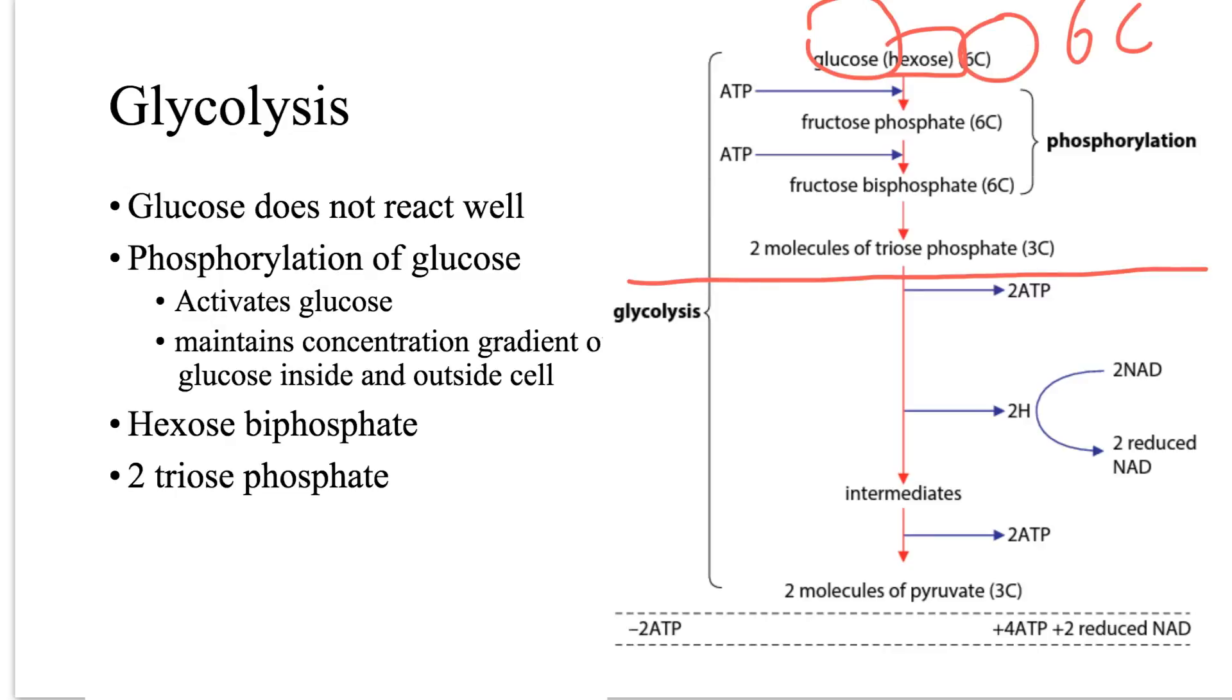In the next stage, hydrogen is then removed from the triose phosphate, and transferred to the carrying molecule, NAD. Remember, the enzyme that splits or breaks off hydrogens from the molecules called it a dehydrogenase. So the removal of hydrogen process called it a dehydrogenation. So two molecules of reduced NAD are produced, as you can see here.